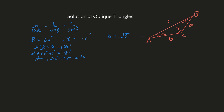Now we will choose the law of sines: a over sine alpha equals b over sine beta equals c over sine gamma. We can write b over sine beta equals c over sine gamma. Since b is given in the question, we are going to solve this equation for c. Multiplying sine gamma on both sides gives: c equals b over sine beta times sine gamma.